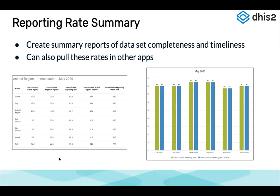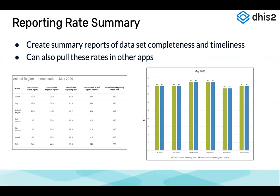A reporting rate summary shows different organization units. For example, one organization unit had 17 actual reports submitted out of 20 expected, giving a reporting rate of 85%. All 17 were submitted on time, so the on-time reporting rate is also 85%. The summary calculates actual reports submitted, expected reports, and the overall reporting rate. We can also pull these rates in other apps like the data visualizer.